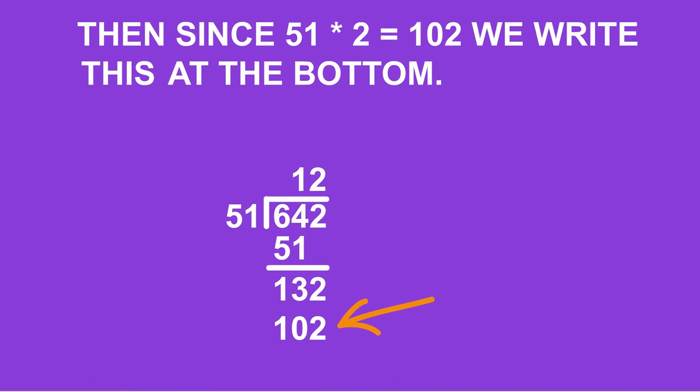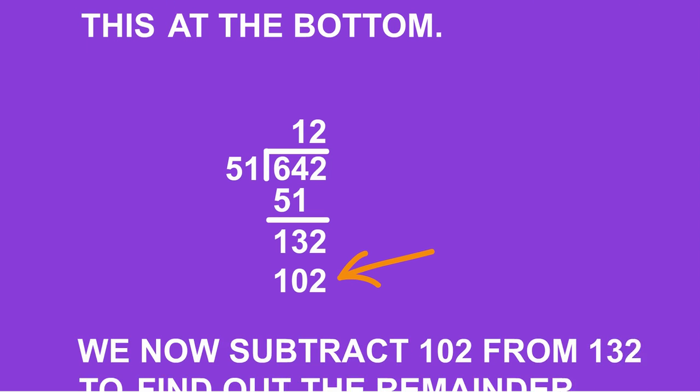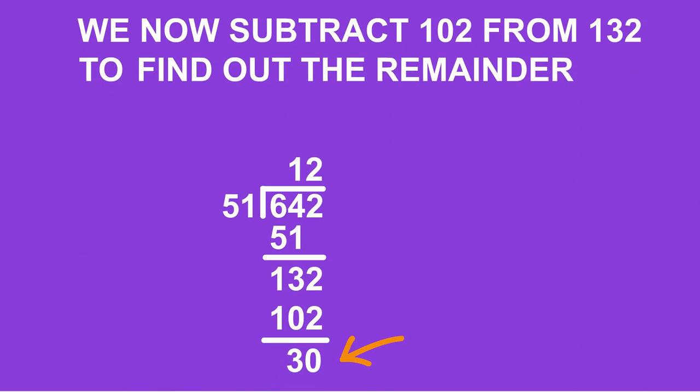Then, since 51 times by 2 equals 102, we write this at the bottom. We now subtract 102 from 132 to find out the remainder.